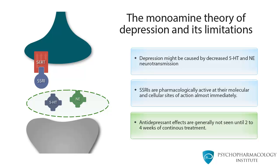Antidepressant effects are generally not seen until 2–4 weeks of continuous treatment. So, the question is: how can we explain this discrepancy between immediate inhibition of serotonin reuptake and clinical effects? In the next slides, we'll explore the hypothesis that might explain the delayed therapeutic effect of antidepressants.